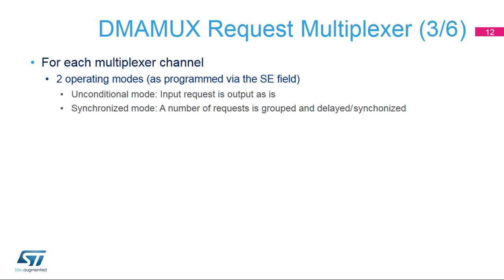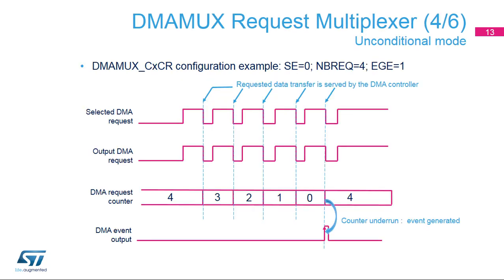For each multiplexer channel, there are two operating modes as programmed via the SE field: unconditional mode, where the input request is output as is, and synchronized mode, where a number of requests is grouped and delayed or synchronized. When configured unconditionally (SE equals 0), the DMA request is transmitted as is and paced by the DMA controller. When the DMA controller is served a data transfer, the DMA request is deasserted and the built-in DMA request counter is decremented. At counter underrun, if enabled via the EGE field, an event can be generated.